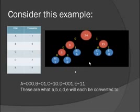Here is how it looks like: in this case, A will get a value 000, B would be 01, C would be 10, D would be 001, and E would be 11. These are what A, B, C, D, E will become when converted.